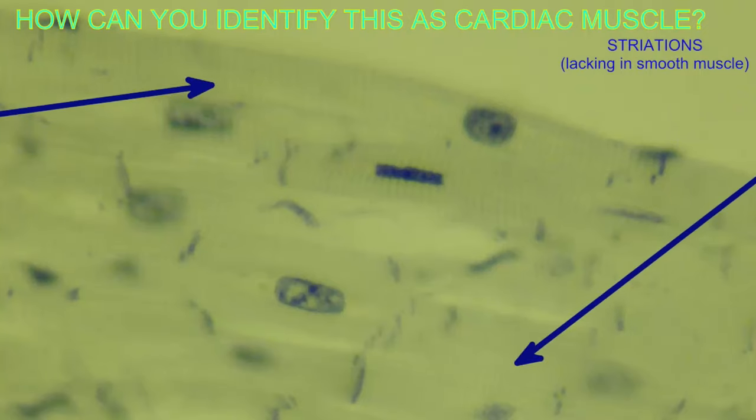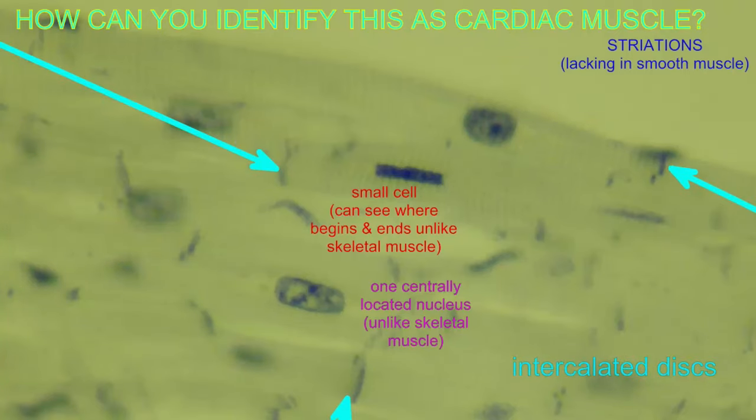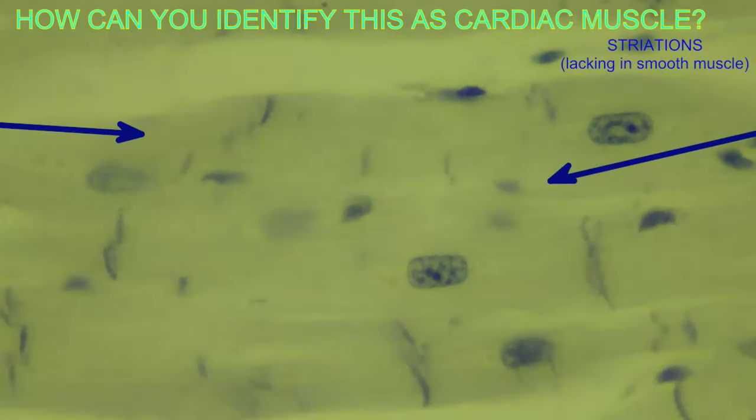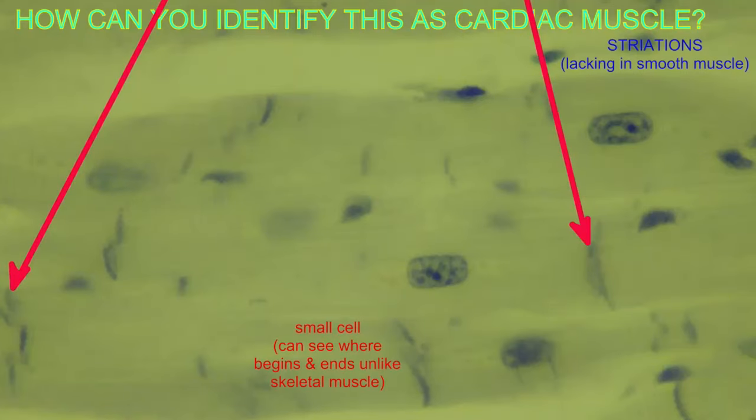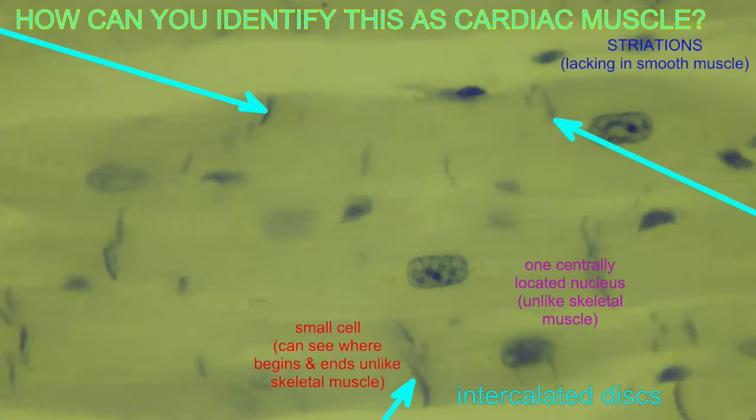Unlike skeletal muscle whose cells are huge and can have hundreds of nuclei, cardiac muscle cells are small. On a microscope slide one can observe where they begin and end, and they have a single centrally located nucleus.